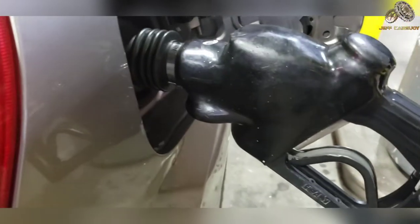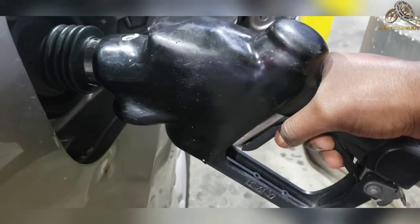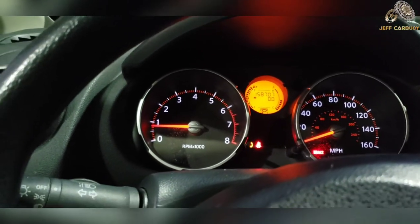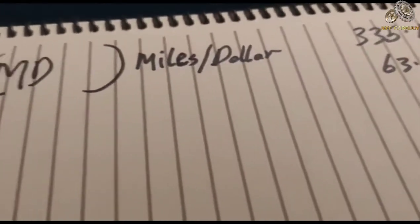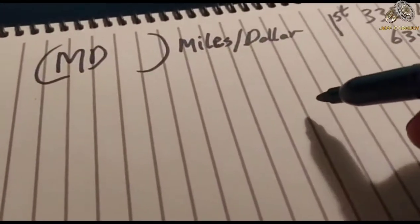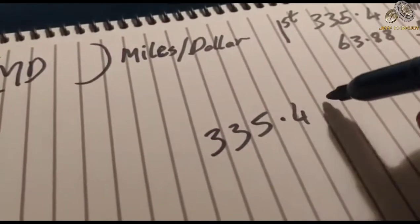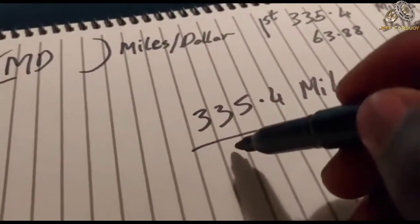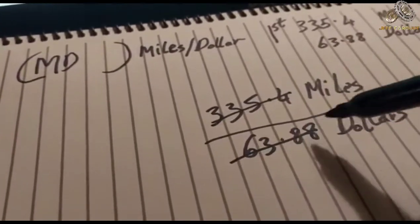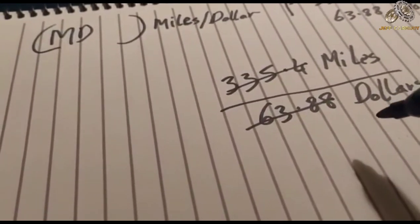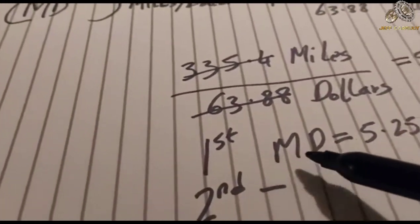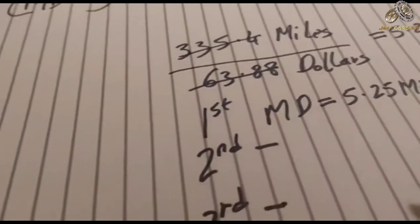The same steps we did for MPG apply here: fill up the tank with gas, set trip A or B to zero, and drive until you need gas again. Step four: record the number of miles from trip A or B. Step five: instead of recording the number of gallons, record the cost to fill up the tank. Step six: divide the number of miles by the cost of filling up the tank. The number you get is your first mile per dollar.